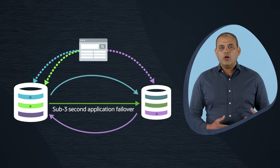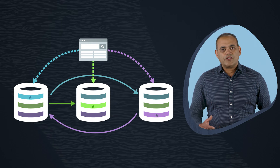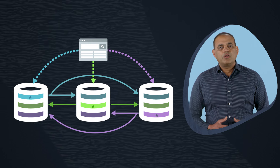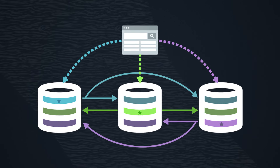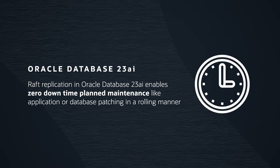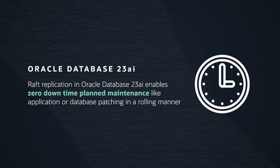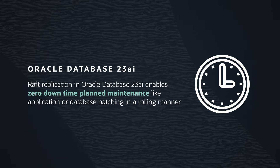If the old leader comes back up, it automatically synchronizes itself with the other shards and becomes available to take application traffic again. This enables a symmetric active-active-active architecture. We can have over 1,000 shards in this architecture with a variety of replication factors. This also enables zero downtime planned maintenance, like application or database patching in a rolling manner.